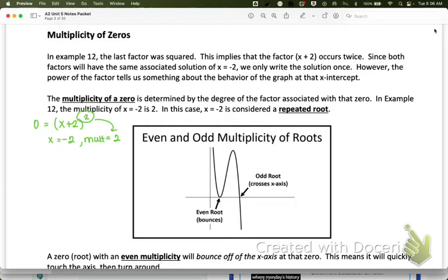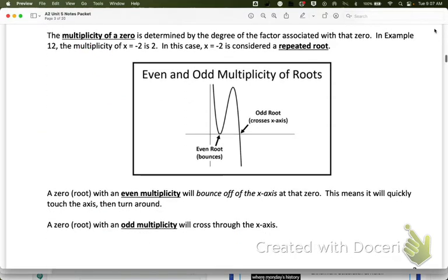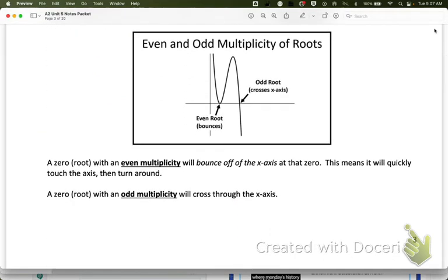And so what that tells us, the multiplicity of each zero tells us whether the graph bounces off of the x-axis at that x-intercept. An even root is just going to touch the x-axis and turn around. Remember, root and zero and x-intercept all mean the same thing. So it will touch the x-axis, but it doesn't actually cross through. It just turns around and goes right back. An odd multiplicity will be like at this x-intercept where the graph crosses right through and comes out on the other side.